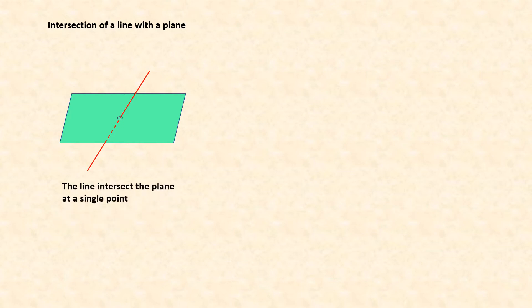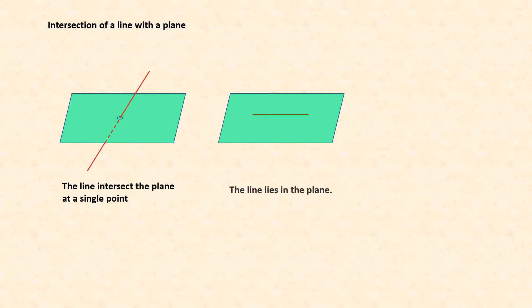Intersection of a line with a plane. There are three situations. First, the line intersects the plane at a single point, or the line lies in the plane.